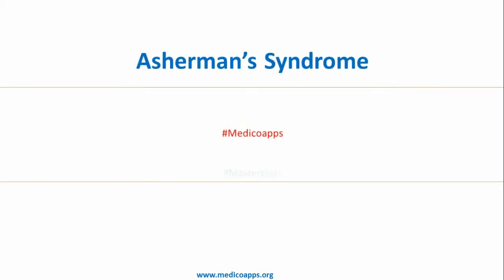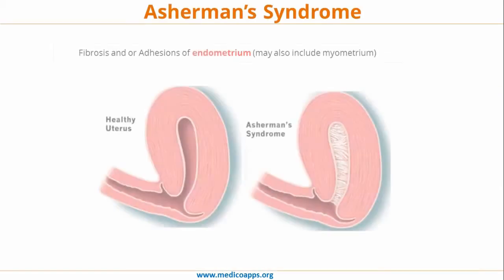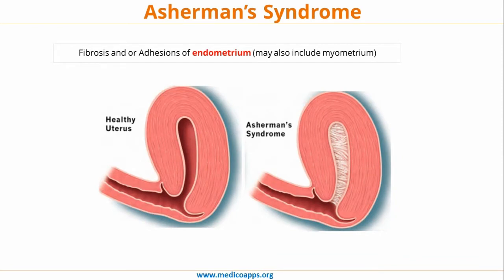In this video lecture we will learn about Asherman's syndrome. Asherman's syndrome is fibrosis or adhesions of the endometrium, and may also include the myometrium. This is a diagrammatic representation of a healthy uterus and what happens in Asherman's syndrome — you can see fibrous bands and adhesions in the endometrium, sometimes extending to the myometrium.